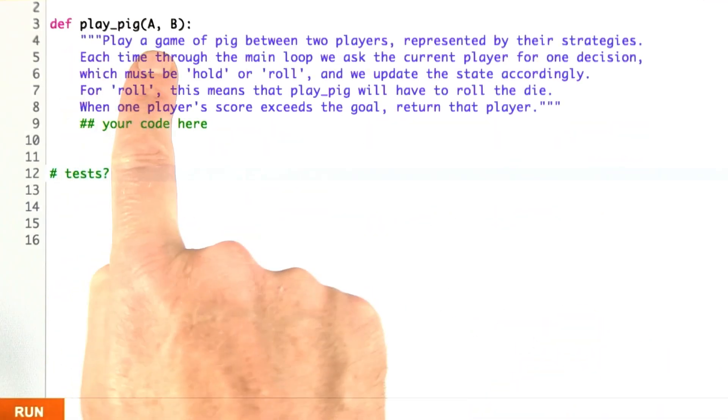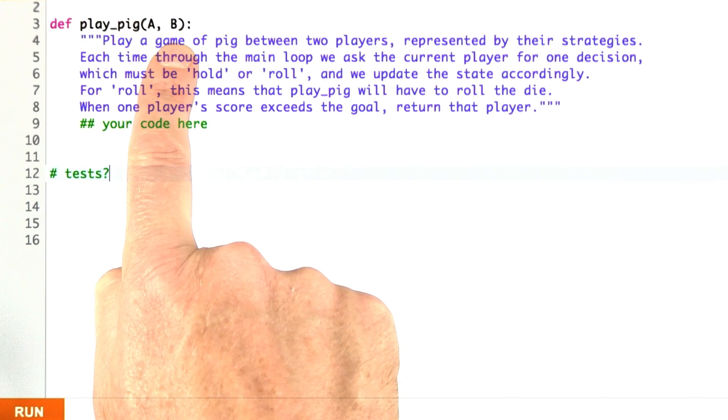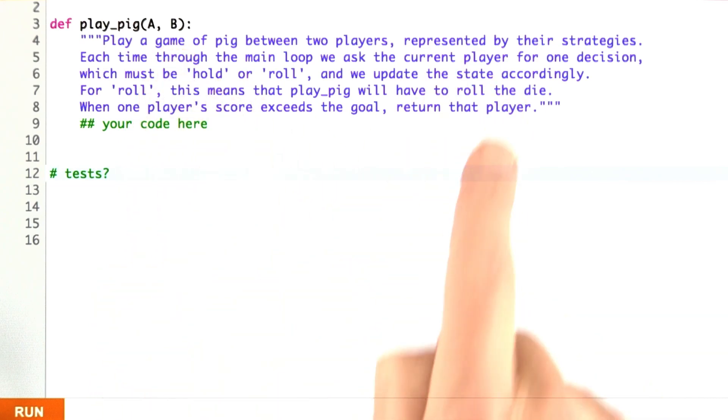So I want you to write the function playpig, which takes two strategies as input, plays the game, keeping track of what's going on, rolling the dice as necessary, updating the state, and then when one player wins, return that player, either A or B.